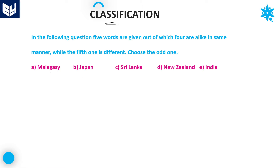Let's see the first question. The options given are: first option is Malagasy, then Japan, Sri Lanka, New Zealand, and India. All these five options are given.